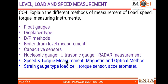The second portion of CO4 deals with angular velocity and torque measurement in shafts. Whenever a rotating part is present, we need to measure angular velocity and the torque developed in the shaft. Using optical and magnetic methods, we can measure speed as well as torque. Additionally, strain gauge type transducers are mostly used in industries for different parameter measurements like load, torque, and acceleration.